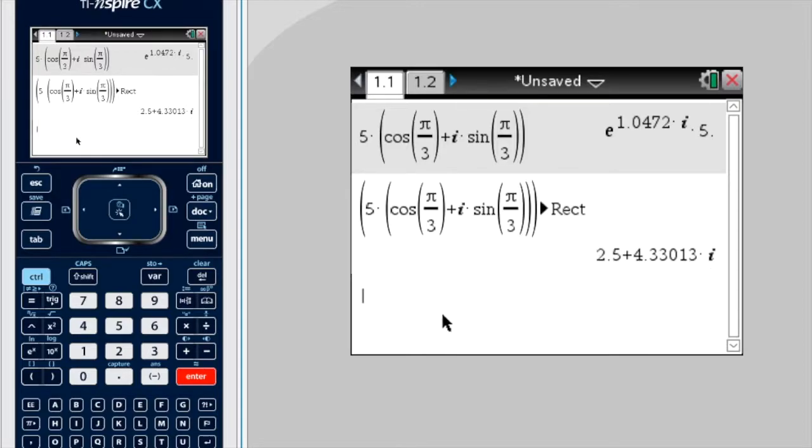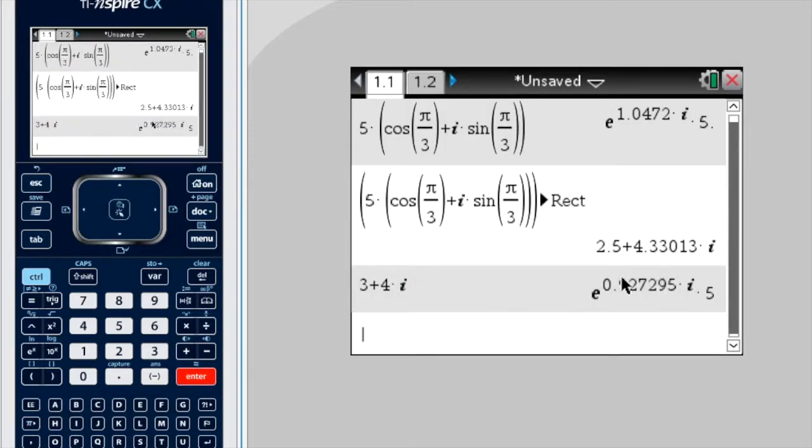Now, let's see if I enter a number in rectangular form, like 3 plus 4 times i, and then press enter. What's it done? It's given it to me now in polar form, so, Euler form.